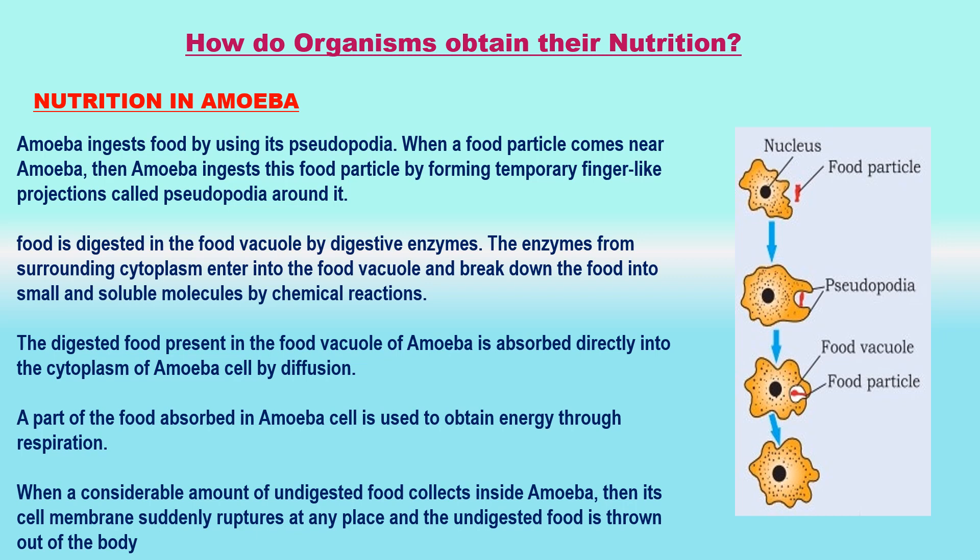Nutrition in Amoeba. Amoeba is a unicellular animal that eats tiny plants and animals floating in the water in which it lives. The mode of nutrition in amoeba is holozoic. The process of obtaining food by amoeba is called phagocytosis. Amoeba has no mouth or fixed place for the ingestion of food. It ingests food using pseudopodia — when a food particle comes near amoeba, it forms temporary finger-like projections called pseudopodia around the particle. The food is engulfed with a little surrounding water to form a food vacuole inside the amoeba, which acts as a temporary stomach.